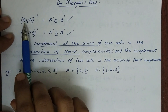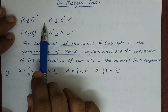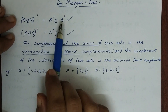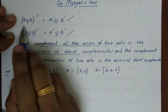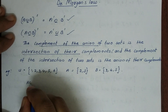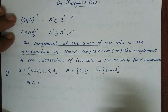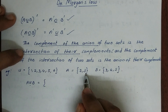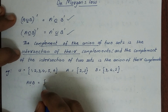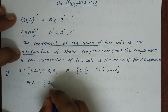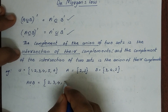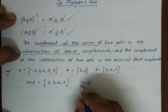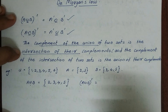A union B complement is equal to A complement intersection B complement. Then A union B — let's say A = {1,2,3,4,5} and B = {3,4,5,6}. A union B is {1, 2, 3, 4, 5, 6}.